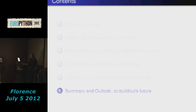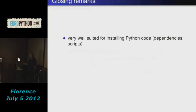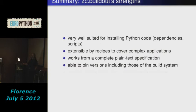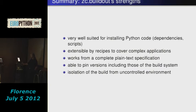There are a lot of recipes available. We have recipes that create files from templates, create directories, and configure deployments. We have recipes for development tools — they may install a test runner and create something called an omelette, which is a directory where all the content of the installed eggs is linked together into one tree. And we have lots of recipes for specific software like NGINX, Django, Sphinx, Supervisor, and more. In summary, buildout is well-suited for installing Python code, it's extensible for more complex use cases, it works from a complete plaintext specification we can maintain in version control, and we can pin versions to get reproducible builds. Buildout also isolates the things it installs from an environment we might not have under our control.